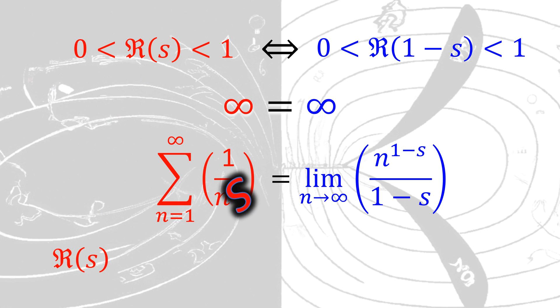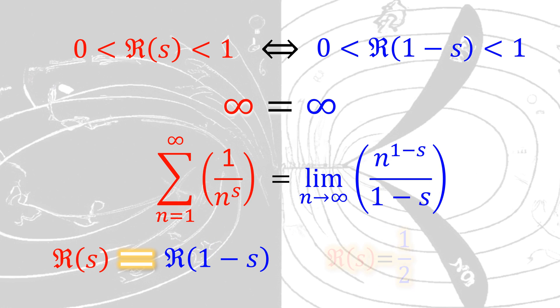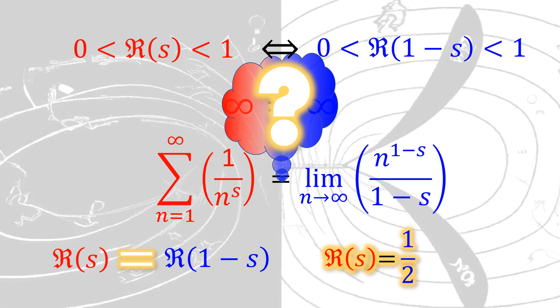Notice the connection between the real part of s of this function and real part of 1 minus s of this function to 1 half. Now the question is, when is this equality satisfied, in other words, what are the solutions for this indeterminate form?